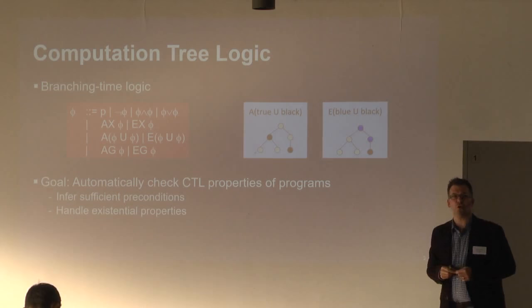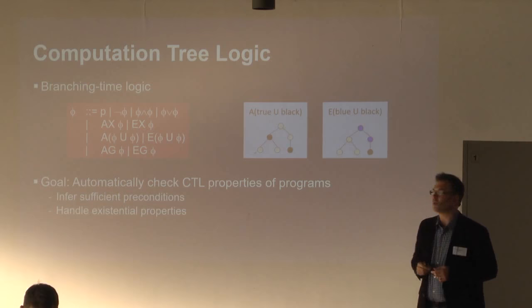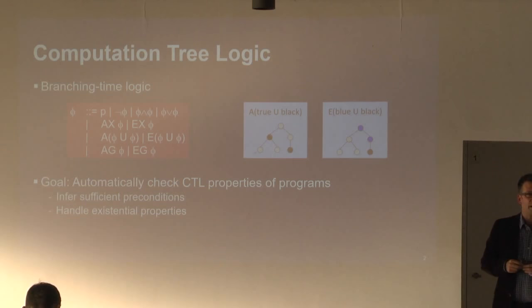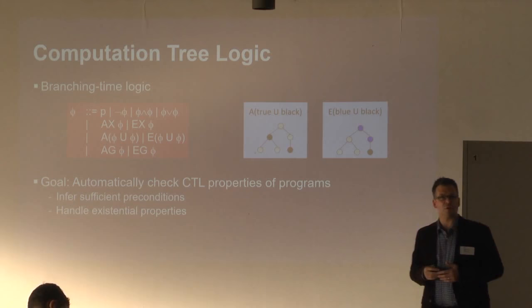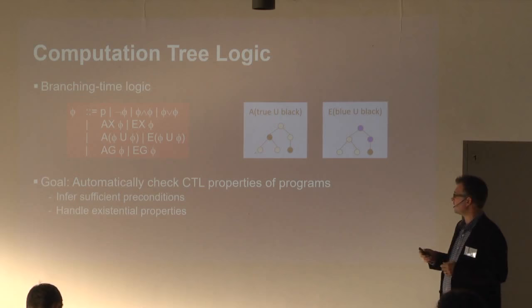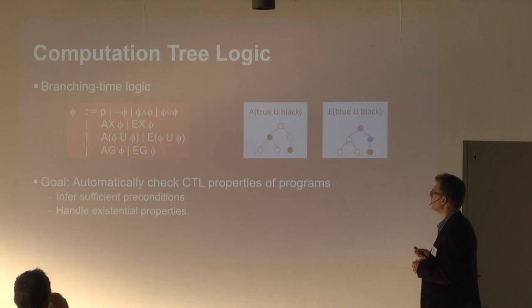If you're interested in using abstract interpretation to automatically check CTL properties of programs, we go beyond earlier work by inferring sufficient preconditions that guarantee the formula actually holds. When this inferred precondition is true, it will always hold; if false, it will never hold; otherwise it tells you for which starting state the formula is guaranteed to hold.